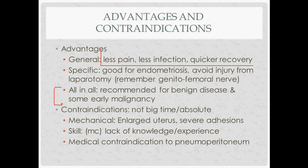For contraindications, there are no absolute ones. Mechanical contraindications include a very large uterus where it's unclear how to get it out through the ports or deliver it vaginally. Severe adhesions and issues related to pneumoperitoneum — for example, if you increase the pressure in the abdominal cavity and the patient has a VP shunt draining into it, the shunt will stop working. The most common contraindication is lack of knowledge or experience doing the procedure laparoscopically.